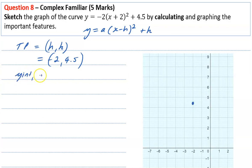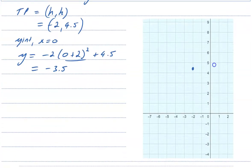For our y-intercept, we let x equals 0. So y equals negative 2 times 0 plus 2 squared plus 4.5. Now 2 squared is 4. 4 times negative 2 is negative 8. Negative 8 and 4.5 make negative 3.5. So 0 across, we want to be at negative 3.5.